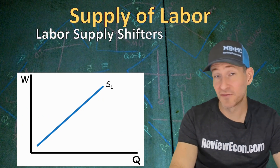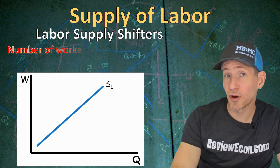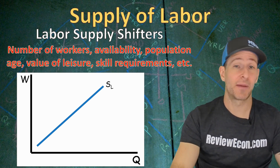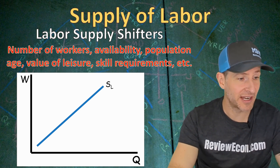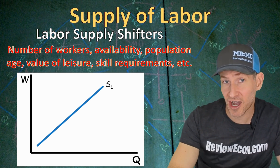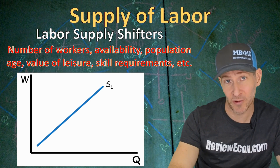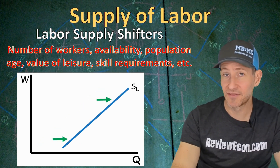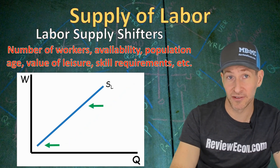Getting back to the supply of labor, the labor supply curve can also shift. The number of workers within a labor market, the availability of workers, the population's age relative to retirement, the value workers place on leisure, and the skill requirements of a job will all impact the quantity of workers available at each wage. If there's an increase in the number of workers willing and able to work, that shifts supply to the right. If there's a decrease, it shifts supply to the left.